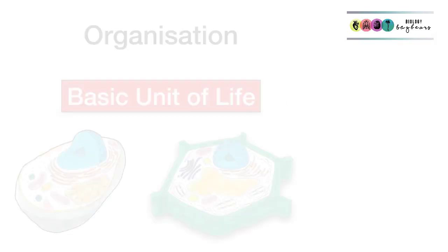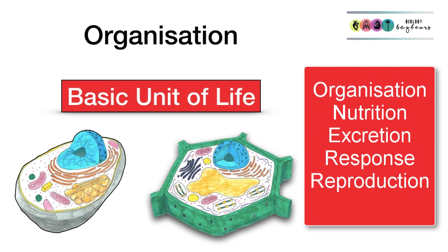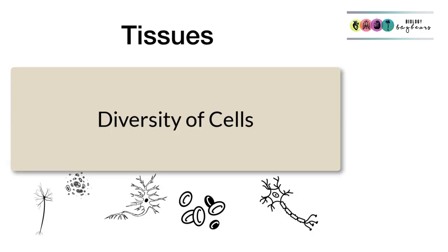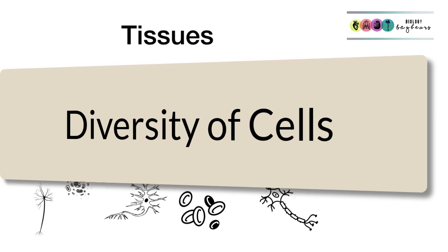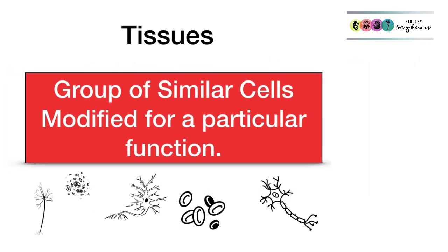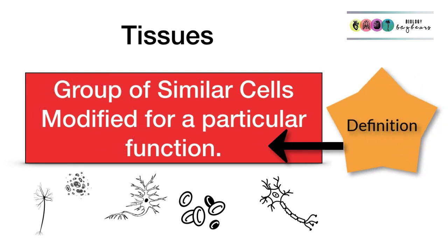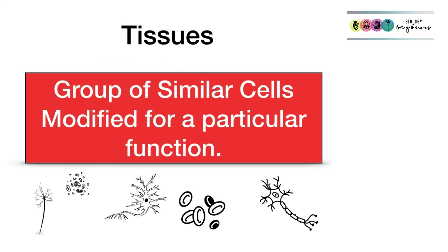This chapter is all about cell diversity and it connects with and leads on from one of the characteristics of life: organisation. So we know that there's a great diversity, a huge variety of cells, and when you get groups of similar cells that are modified to carry out a specific or particular function, well then you get tissues. Being able to define what a tissue is is very important for your exams.